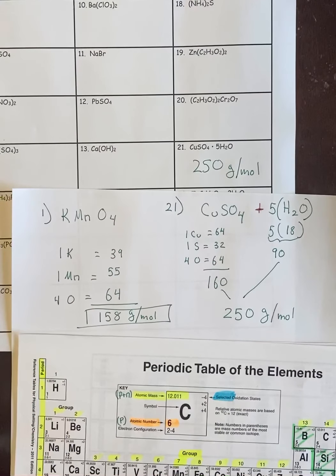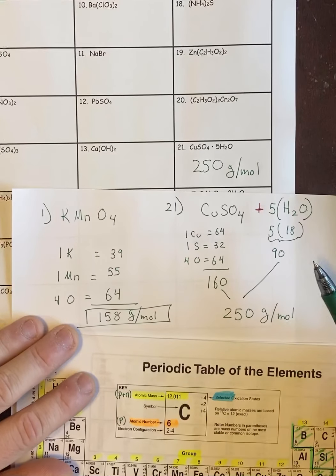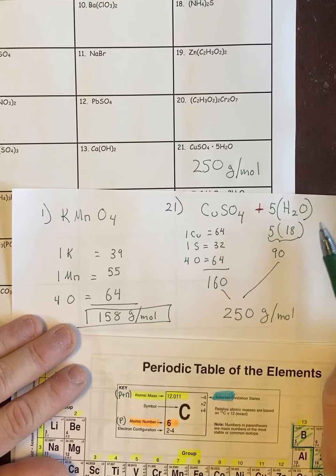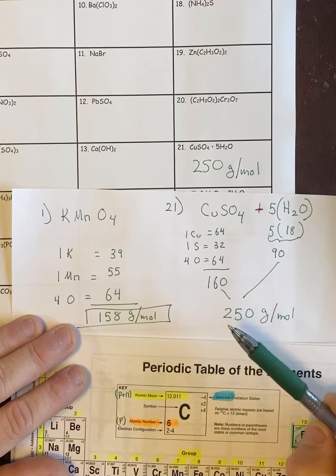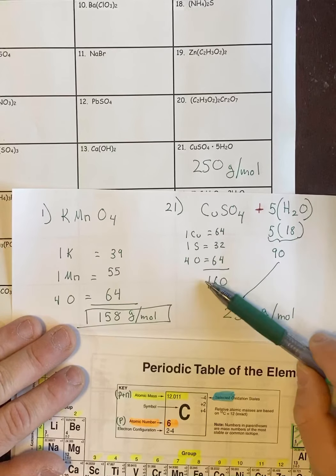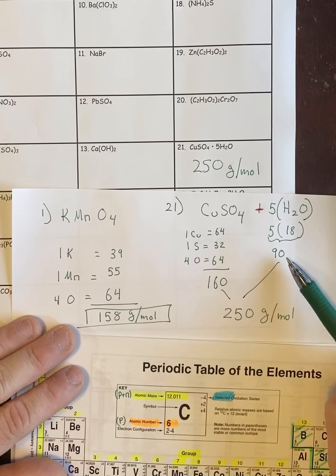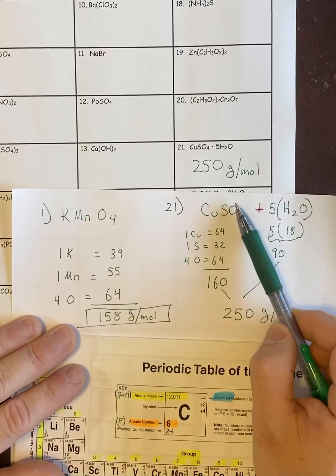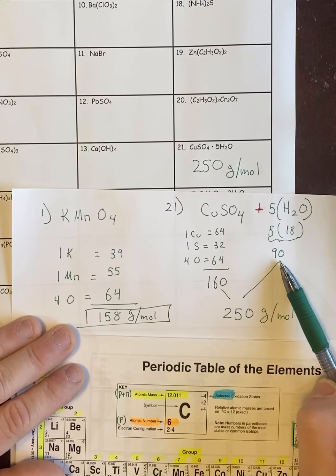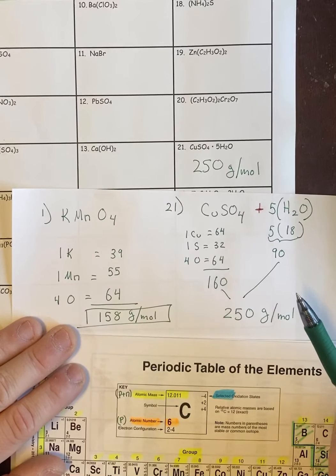The reason I broke these out separate is in a couple days, or in a couple topics from now, we're going to be doing stuff called percent composition. And we are going to want to know what percent of this compound is water and what percent is copper sulfate. That's what this CuSO4 is called. And so it helps to break them down separately because you will eventually at some point need to know that the CuSO4 weighs 160 and that the water weighs 90. So by separating them out like this, you will save yourself a little bit of time down the road.